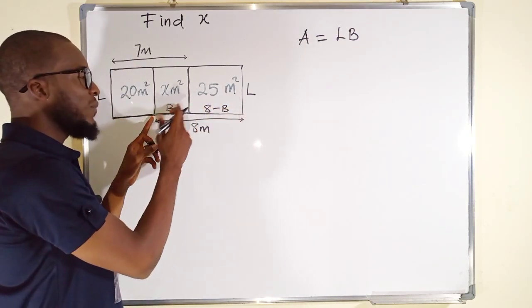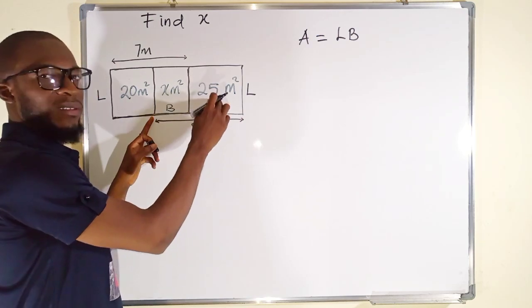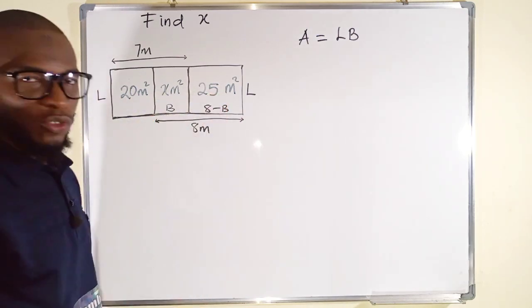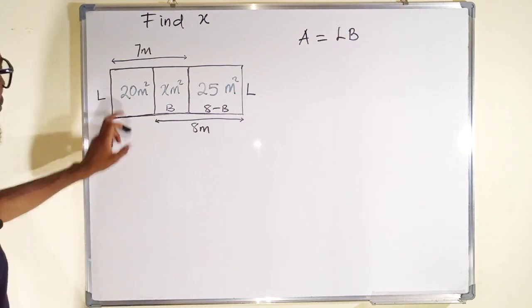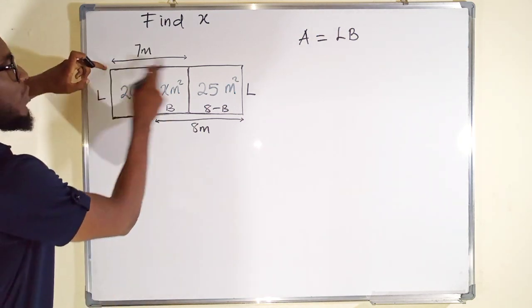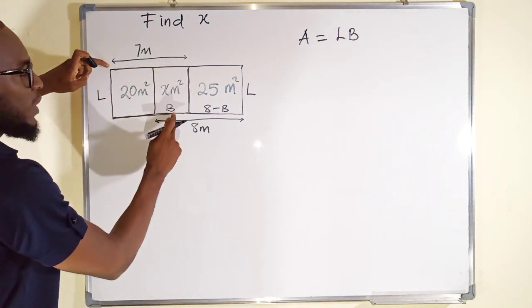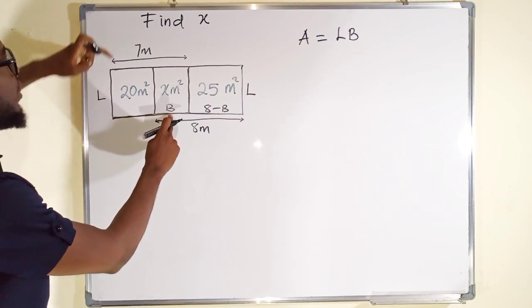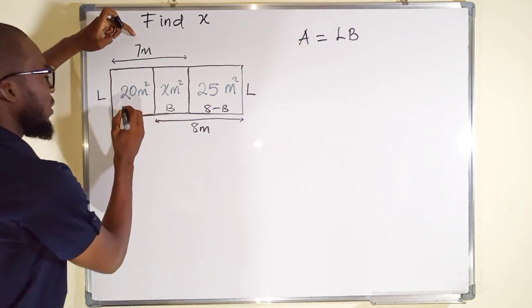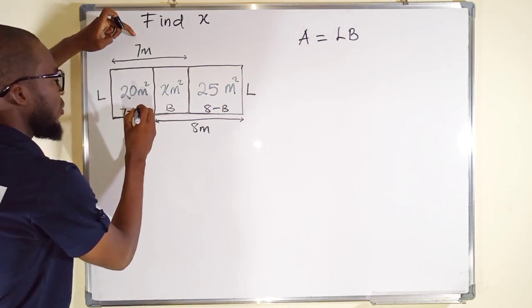If you remove B from 8, what is left is the breadth of this square or the length. The same thing here. You can see from here to here is 7 but this one alone is B. Subtracting B from 7, you will be left with this one. We have 7 minus B.